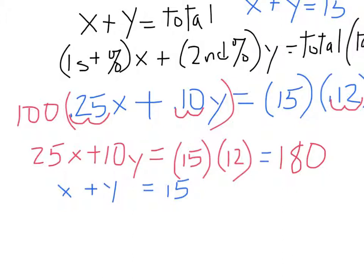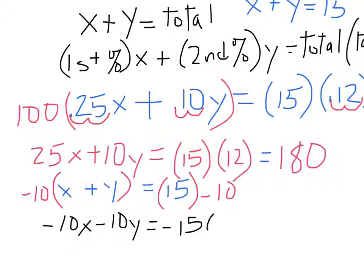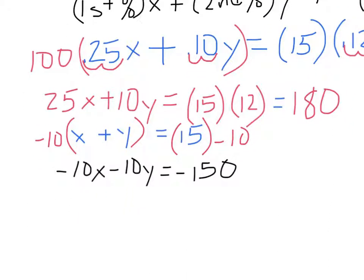Now we want to use elimination, and we want to get one of these to be the negative of one of those. It looks like 10 is the smaller number. So if we made this negative 10 and then positive 10, those would drop out. Let's multiply each side by negative 10. That gives us minus 10x, minus 10y, and minus 10 times 15 is minus 150.